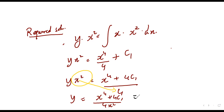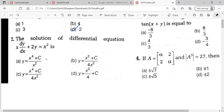Bringing x² down, we get y = x⁴/(4x²) + C. We can divide everything by 4 to get x²/4 + c, where 4C₁ is treated as a constant c. Checking the options, it clearly matches option C — the constant notation doesn't matter.